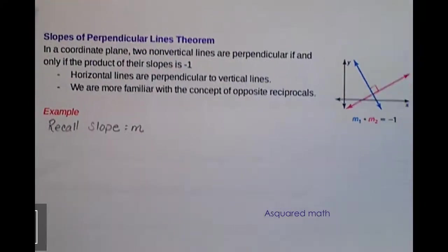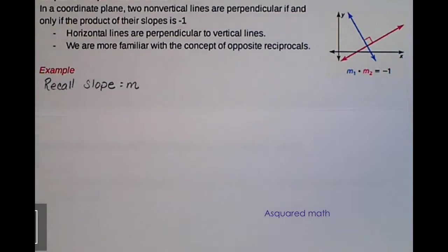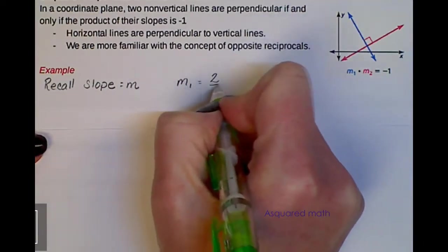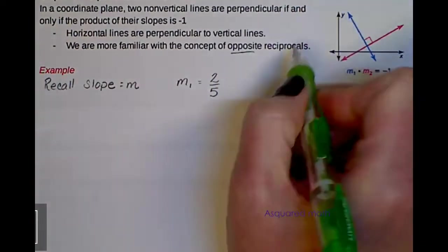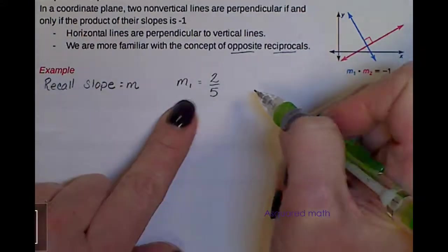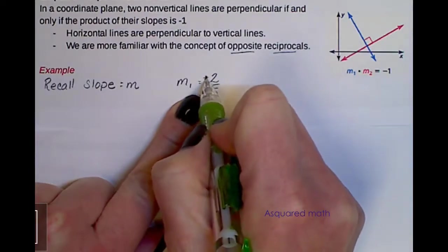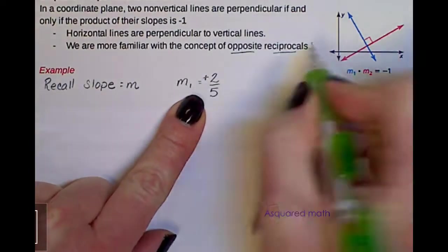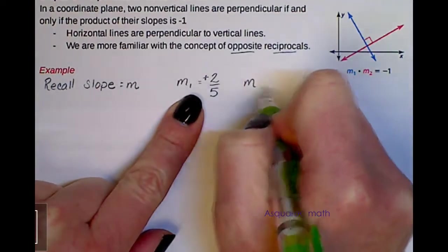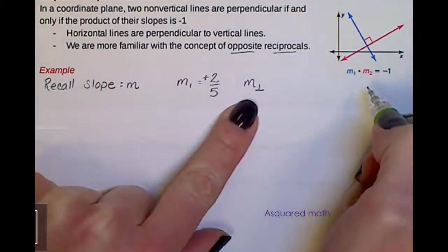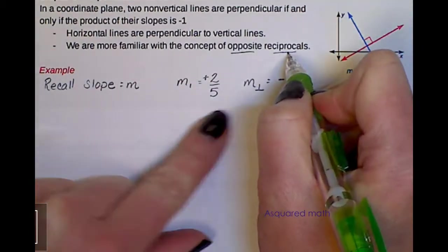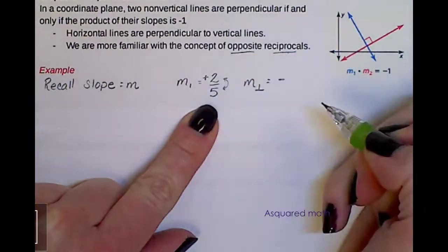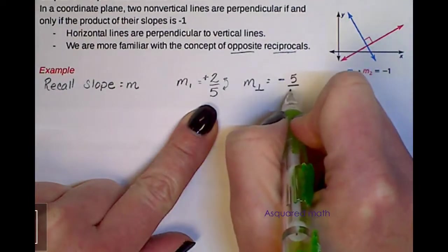So let's do an example to show you what they mean by their products being negative 1. So if I just make up some slope, and I say that my first slope, m1, is 2 fifths. I always teach my students about opposite reciprocals. Opposite meaning take the opposite sign, and then reciprocal meaning flip your numerator and denominator. So for m1, we have a positive value here. The positive isn't written, but it's there. So the opposite sign to that would be negative. So our slope perpendicular, we have the opposite sign, so we know this has to be negative. And then we're going to take the reciprocal of the slope that we were given.